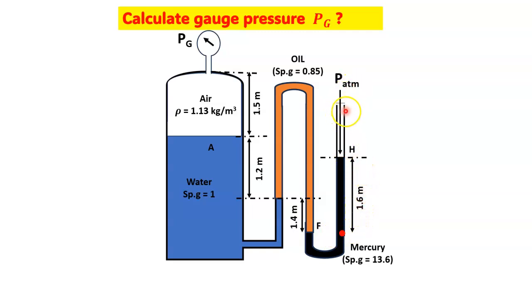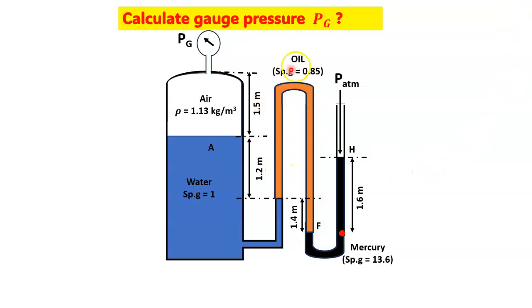One limb of this multifluid manometer is open to atmosphere, and we have to calculate the gauge pressure. The manometric liquid is oil with a specific gravity of 0.85. Mercury is also present with a specific gravity of 13.6.